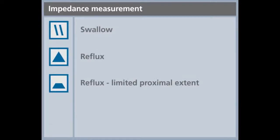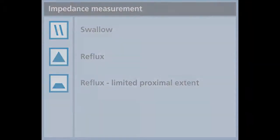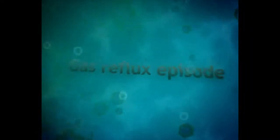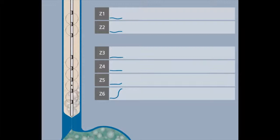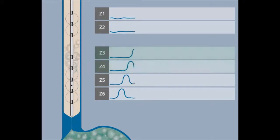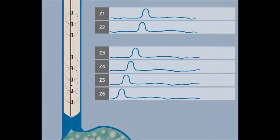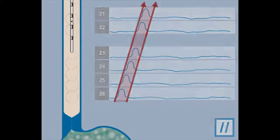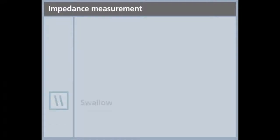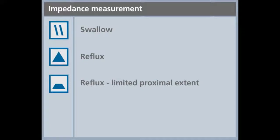We will now explain the impedance pattern of a gaseous reflux. Air is released from the stomach — this is a belch. When air touches two rings of a channel, the impedance increases. When the air moves farther up, the impedance on the channel above will increase, and the impedance level at the distal channel will return to the baseline. The entry and exit in each segment is depicted by two lines. We have seen three impedance patterns: a liquid swallow, a gastroesophageal reflux, and a gaseous reflux.